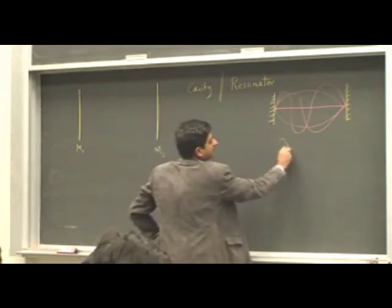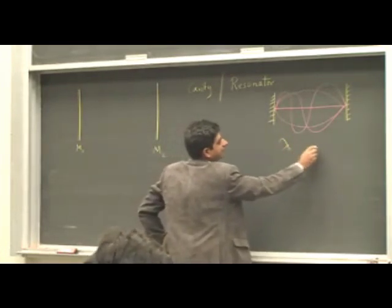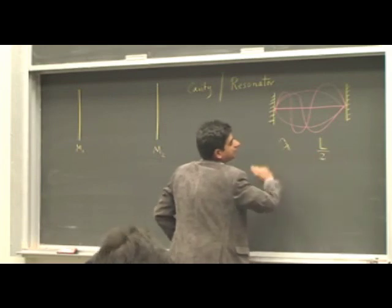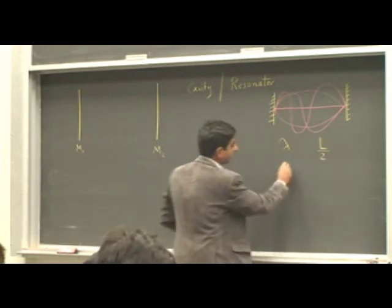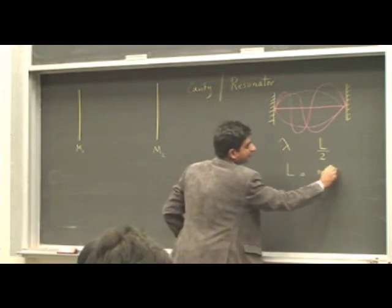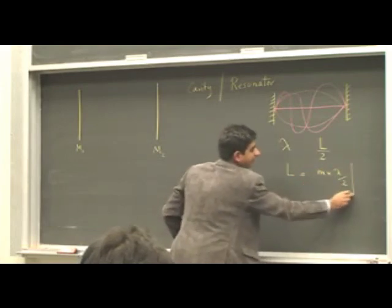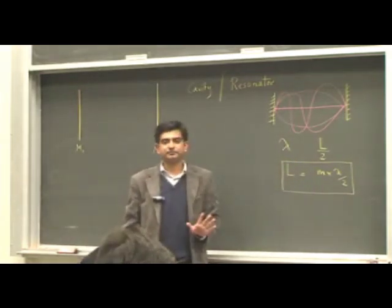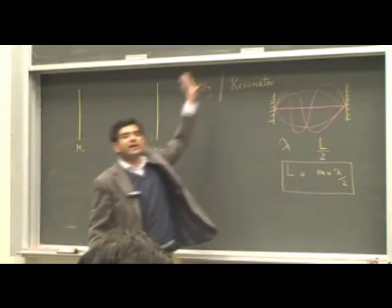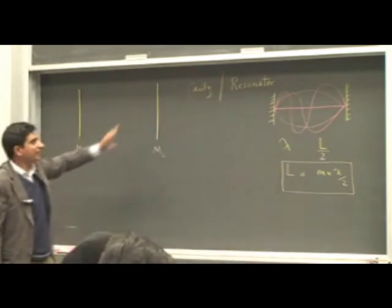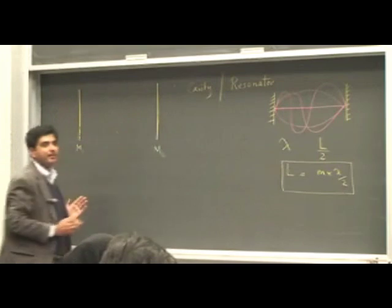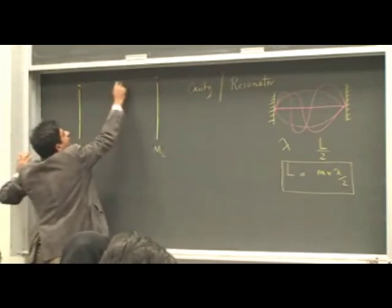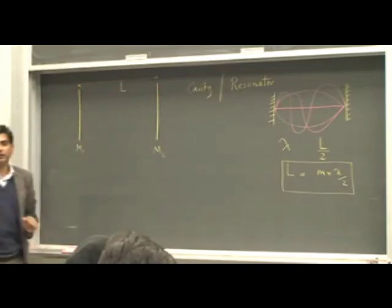There are normal modes of this string. Which means that lambda has to be... What's the relation? L has to fit M times lambda over 2. Right? So this is the condition for standing waves. Where M is an integer. Now, exactly using the same analogy, how does a laser work? A laser works by having two mirrors. And there is a cavity in between called a cavity or a resonator of length L. Of length L.